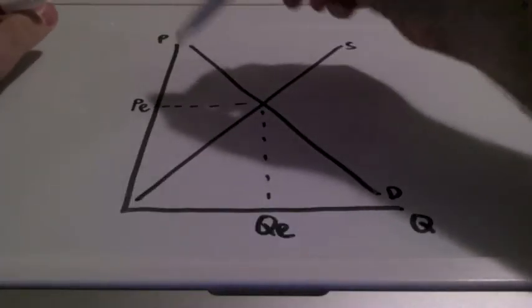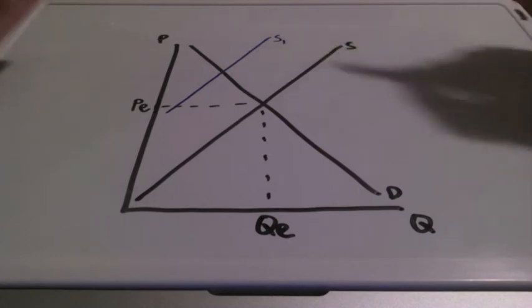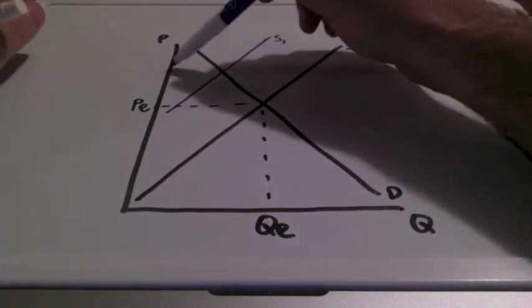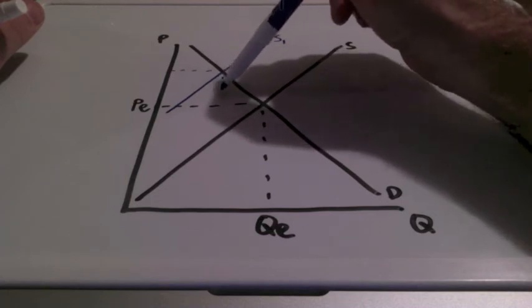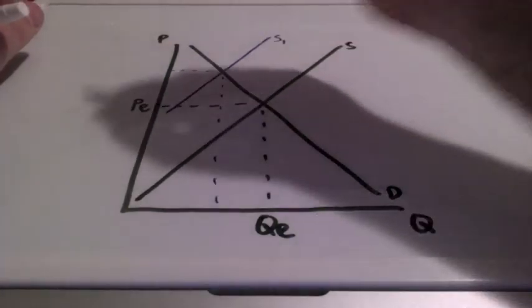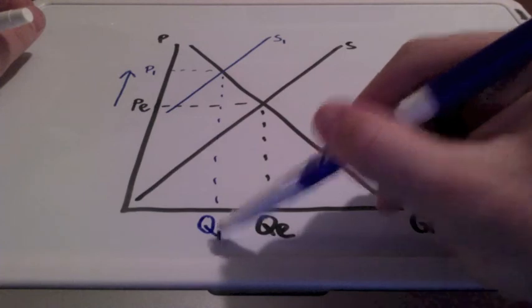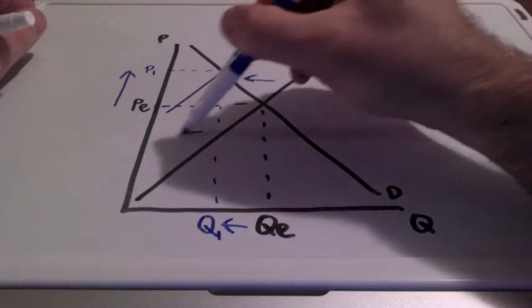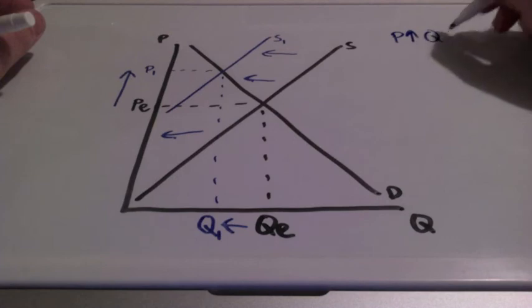In this example, we are going to take a look at a decrease in supply, because costs of production have increased and firms will supply fewer goods and services as a result. So when costs of production increase, we shift our supply curve to the left. We have a new price here — prices will increase and quantity will decrease. This is a leftward shift in the supply curve: when prices go up, quantity will go down.